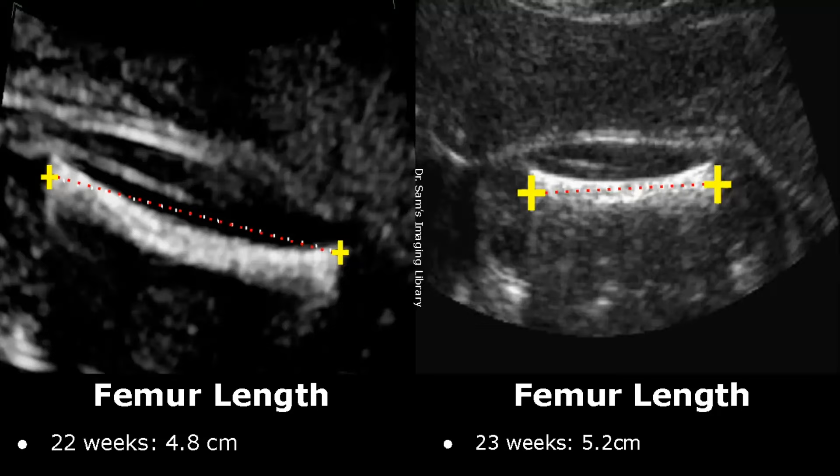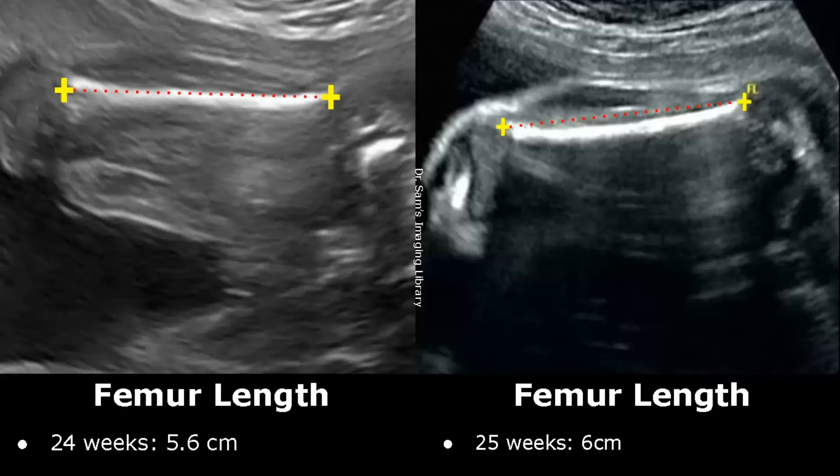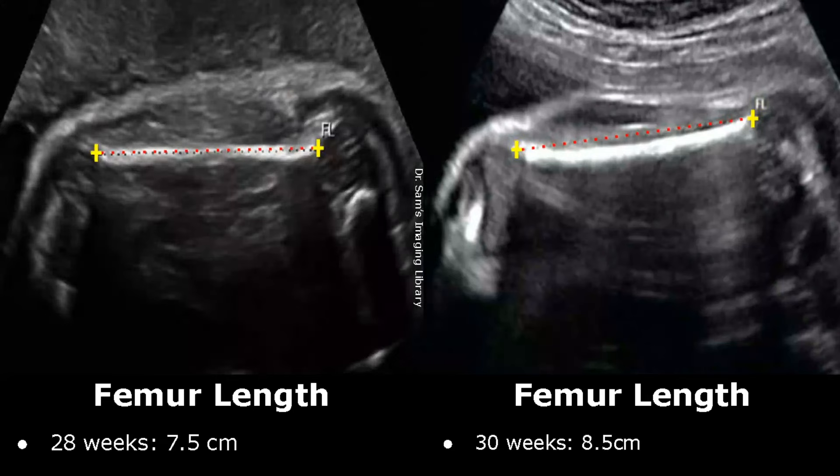A length of around 5.6 cm at 23 weeks. At 28 weeks, the length can be around 7.5 cm. And by 30 weeks, this length is around 8.5 cm.